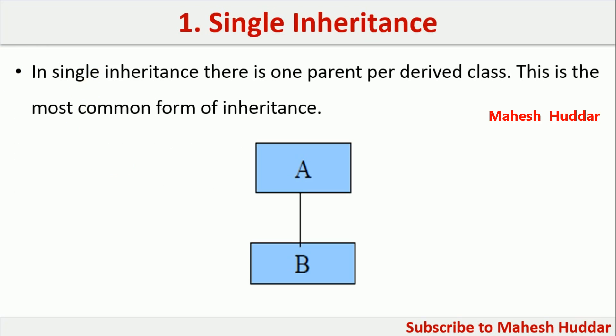In single inheritance, there will be one base class and one derived class. In this example, B is deriving the properties of A.